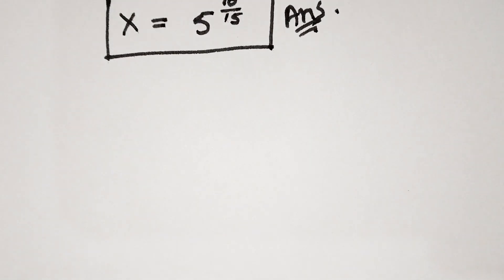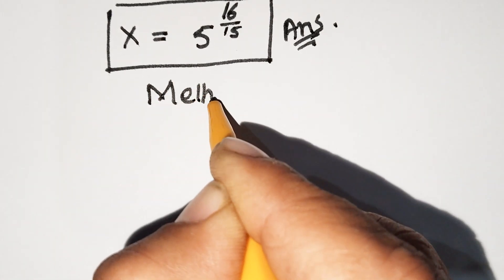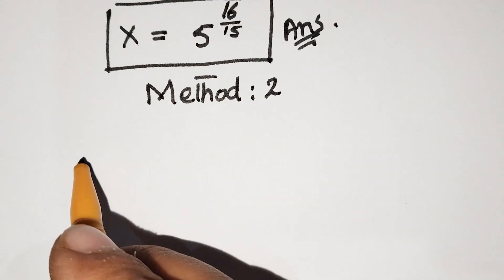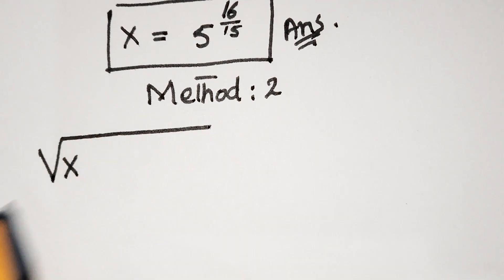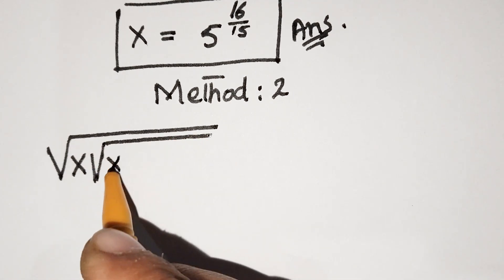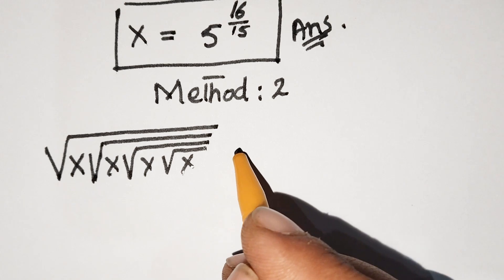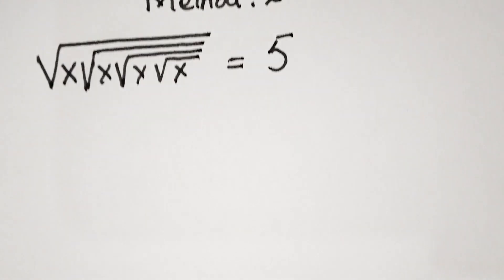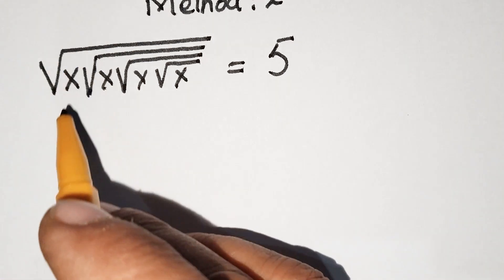Now we move to Method 2. The question is: the square root of x, then square root of x, then square root of x, then square root of x, all equals 5. We know the value of a square root can be written as a power of one half.